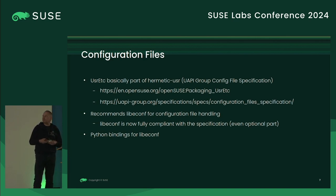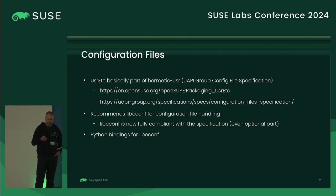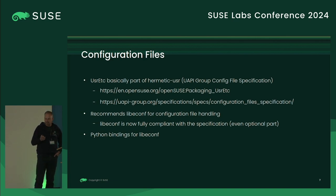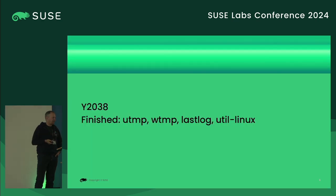Our configuration library LibEconf is now the default and the only proposed one in the specification — if you adjust your project, use LibEconf. To make that even easier, our last trainee created Python bindings for it, so you can use it not only from C but also from Python. C foreign-function interface bindings are also available meanwhile.